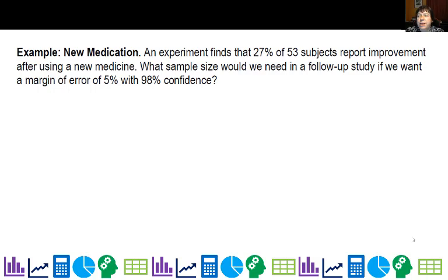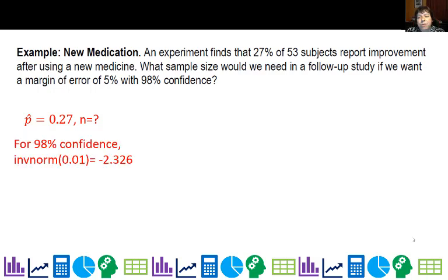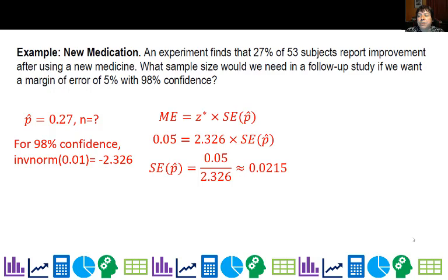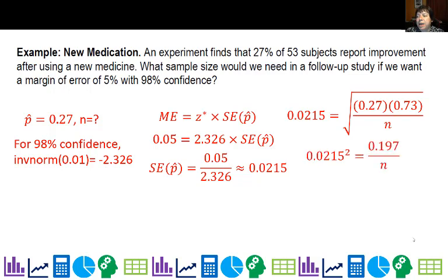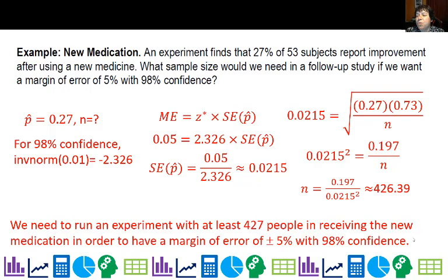What sample size would we need in a follow-up study if you wanted a margin of error of 5% with 98% confidence? Again p-hat is the same. For 98% confidence, with 2% leftover — one percent on each side — we do inverse norm of 0.01 and get a z-value of negative 2.326; use the positive value. Substituting gives a standard error of 0.0215. Using the standard error formula, already knowing p-hat and (1 minus p-hat), squaring both sides and solving for n gives about 426.39. So we need 427 people for plus or minus 5% with 98% confidence.